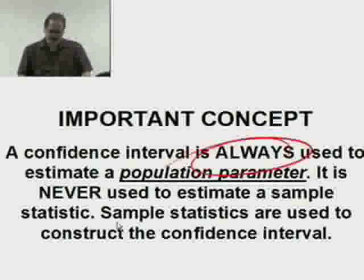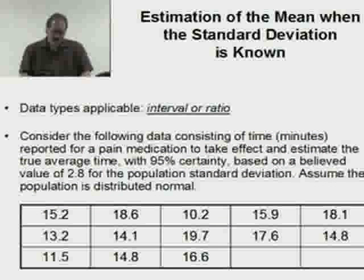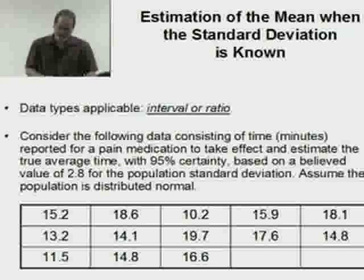Confidence intervals are always used to estimate population parameters. It is never used to estimate a sample statistic. When we want to estimate the mean when the standard deviation is known, the data types applicable are interval or ratio—those are the only two measurement scales that make sense to calculate a mean to begin with.